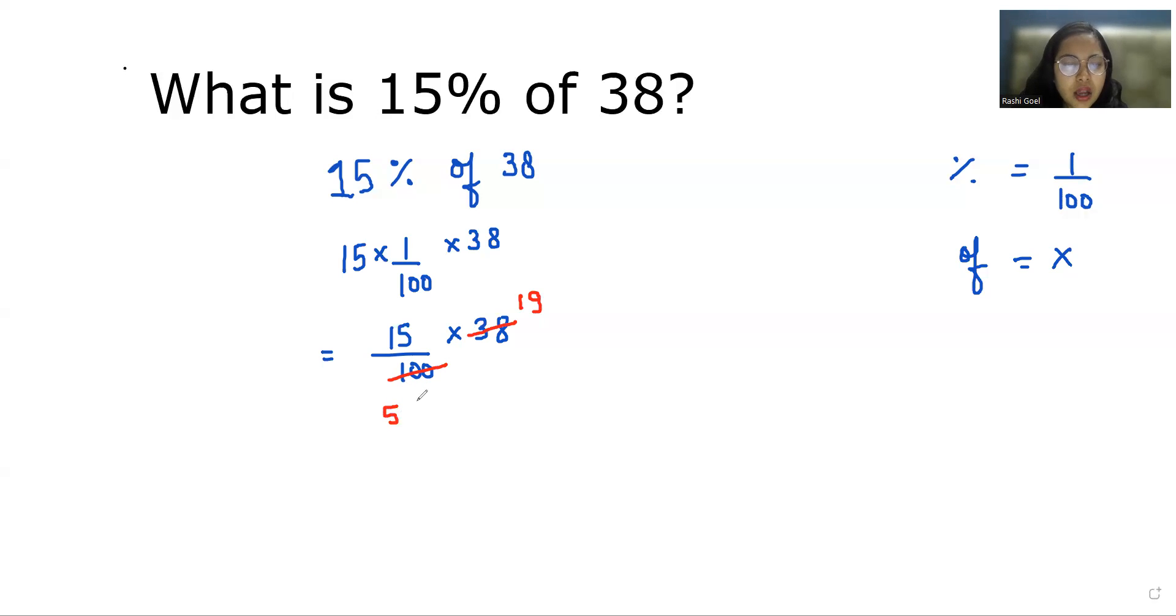Now 15 and 50 are both divisible by 5. 5 times 3 is 15 and 5 times 10 is 50. So what is left in the numerator is 3 times 19, and in the denominator it's 10.